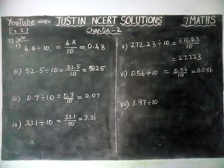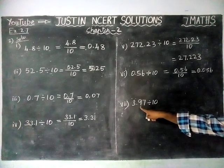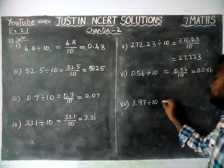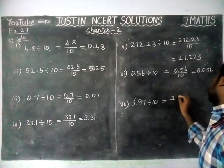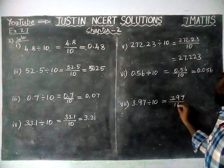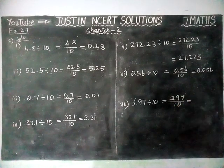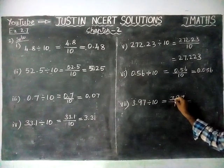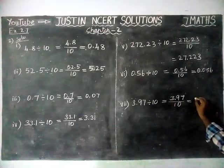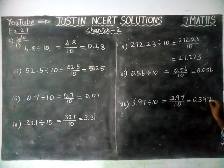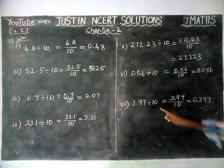Seventh question: 3.97 divided by 10. When we are dividing by 10, we have to move left hand side one step. We already have two decimal digits, so we move left hand side again. The answer for the seventh question is 0.397.